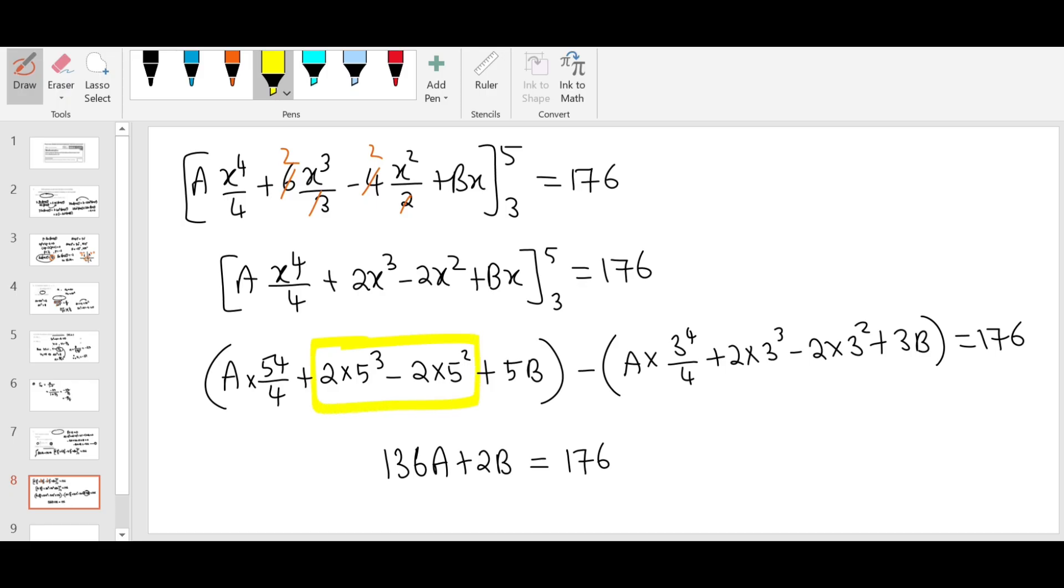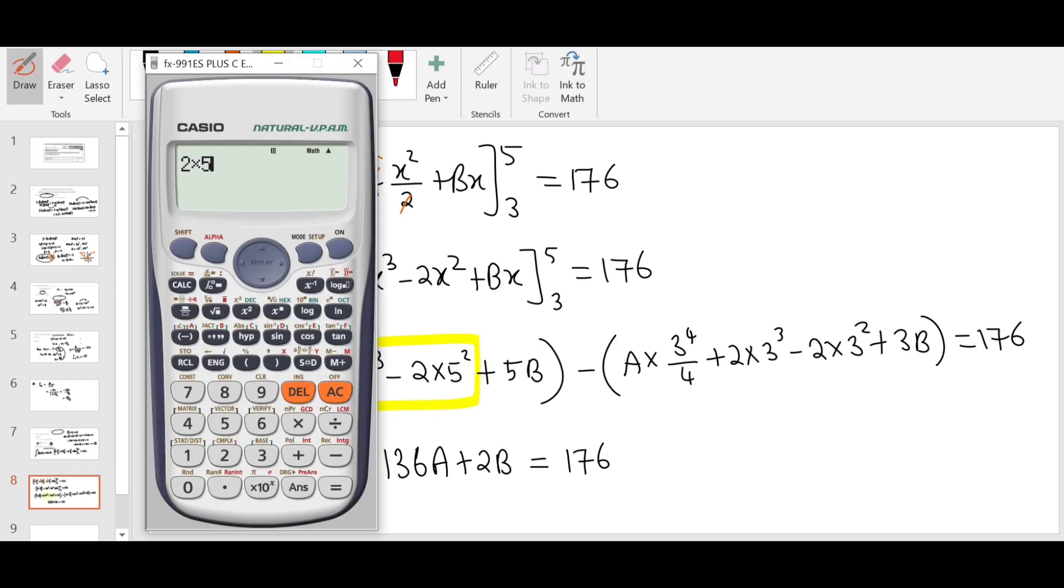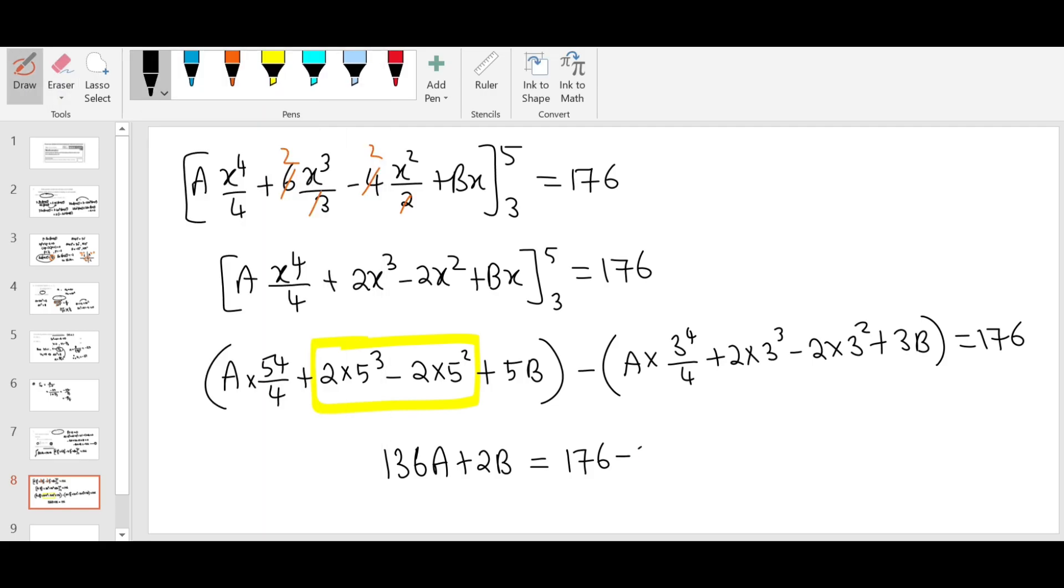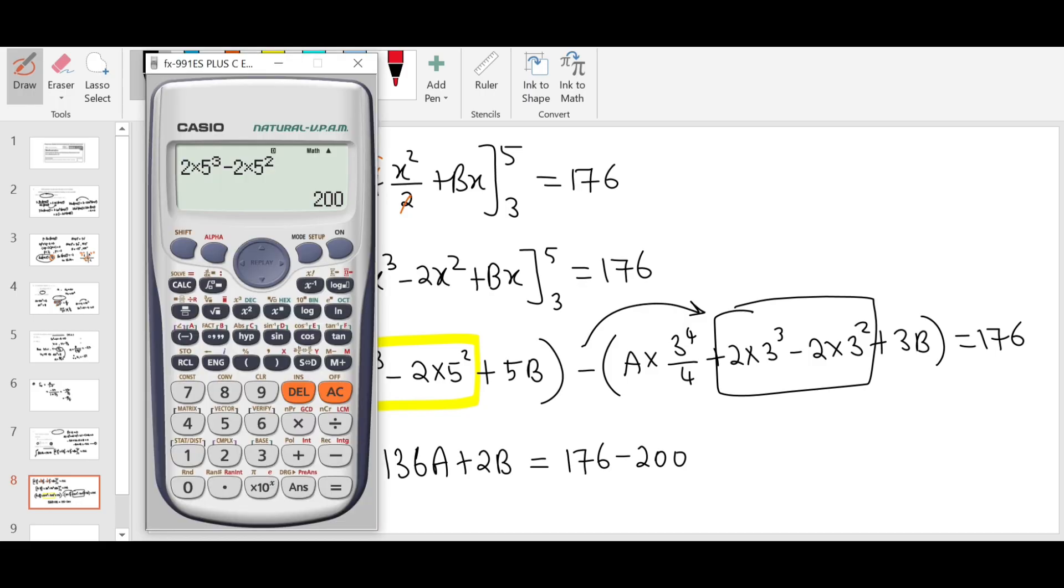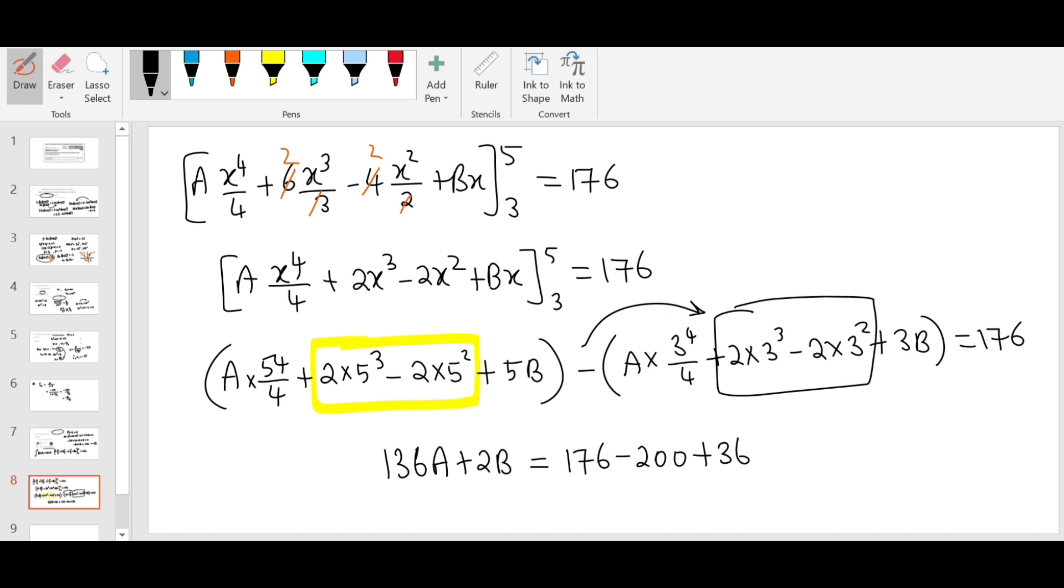We have 5B minus 3B is 2B equals 176. Now I'm going to simplify the numbers. I'm going to simplify this whole thing first: 2 times 5 cubed minus 2 times 5 squared is 200, which goes to the other side as minus 200. And then simplify these two, multiply by negative sign and bring it to the other side: 2 times 3 cubed minus 2 times 3 squared is 36. Minus minus 36 goes to the other side as plus 36. So I will get 176 minus 200 plus 36 equals 12. Therefore, 136A plus 2B equals 12. That's equation 2.